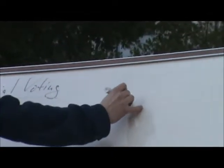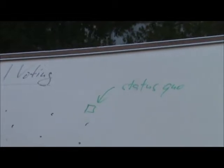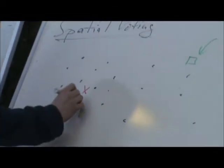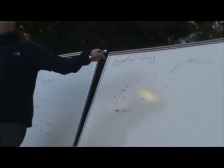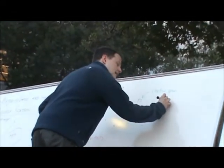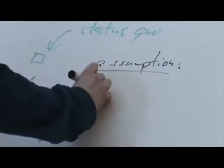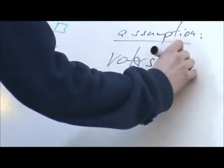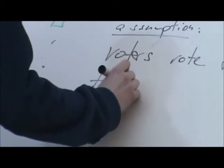This is the status quo, and this is some proposed new legislation. In spatial voting, we make the assumption that every voter is going to vote for the alternative that is closest to his or her ideal policy. So in this case, the new policy will win, because most of them would like to adopt the new policy. This is an important assumption: voters vote for the alternative closest to their ideal.